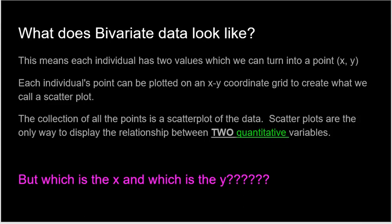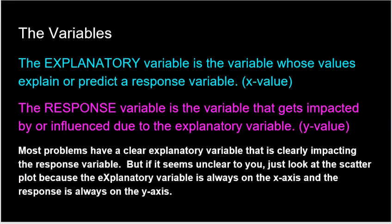But the question is, all right, so I have this data point. X is one of the variables. Y is the other variable. But which is the X and which is the Y? Well, here are the two variables that we are going to define. The explanatory variable is the variable whose values explain or predict a response variable. This is the X. Think explanatory. It's really kind of hard to mess that up. Explanatory is the X variable.